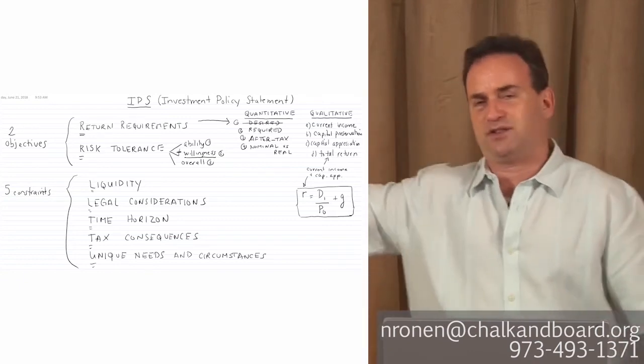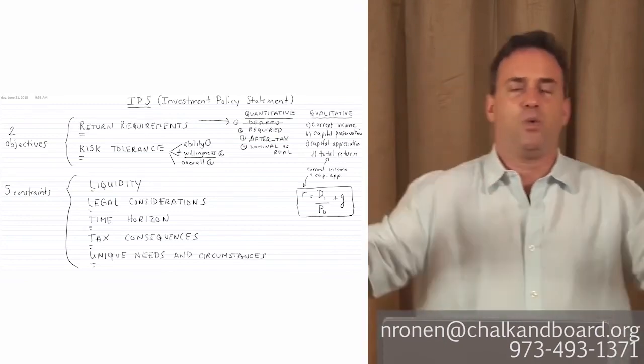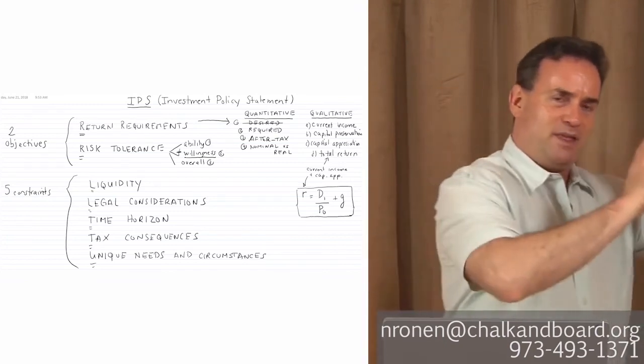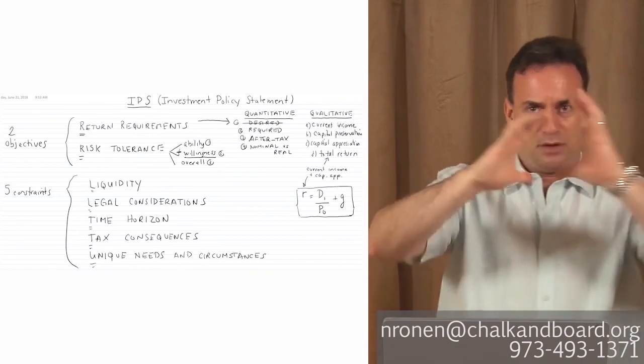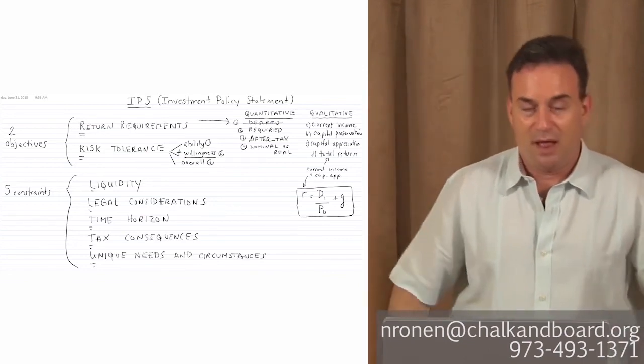Once we take the IPS plus the portfolio manager capital market expectations, IPS plus capital market expectations equals asset allocation. Then we work with the client to determine how to allocate the funds to the investable universe of assets that the client is willing to invest in. Domestic stocks, domestic bonds, international stocks, international bonds, real estate, money market funds, venture capital, private placement, whatever it may be. Remember that: IPS creation, then capital market expectations, equals asset allocation. That's key.